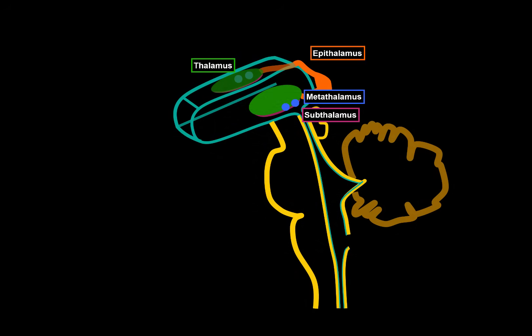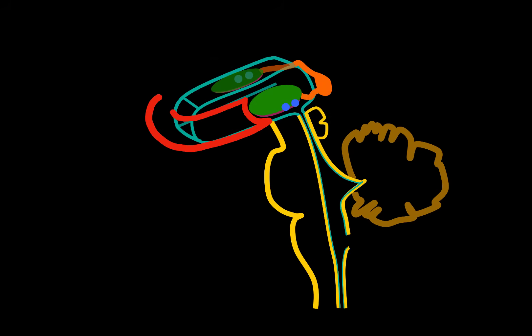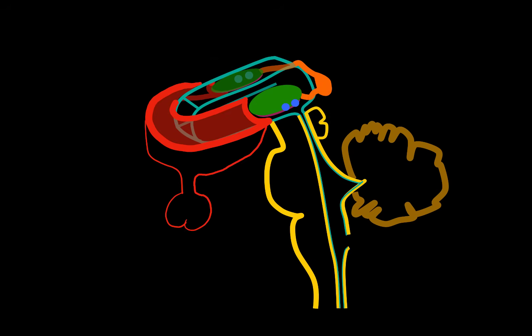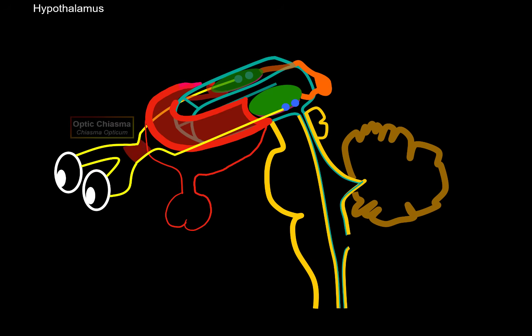The last part of the diencephalon is the hypothalamus — the structures found around the anterior portion of the third ventricle. The hypothalamus is more of an area made up of different parts or nuclei, with some external structures considered part of it. The optic pathway's optic chiasm and optic tracts are considered part of the hypothalamus here, though some sources list them separately as thalamus opticus.